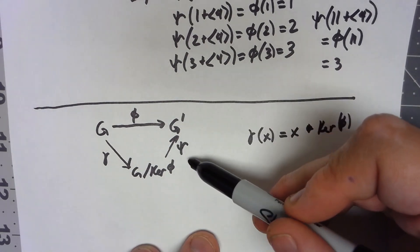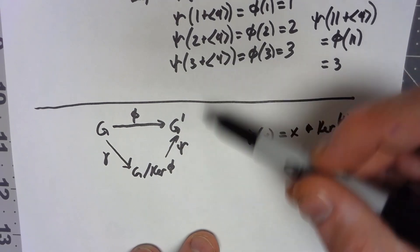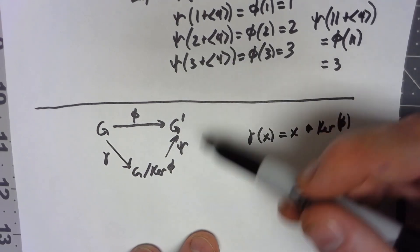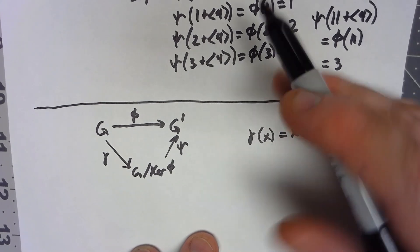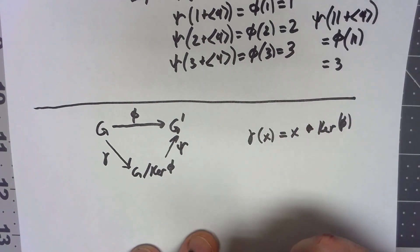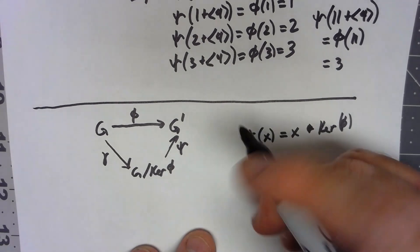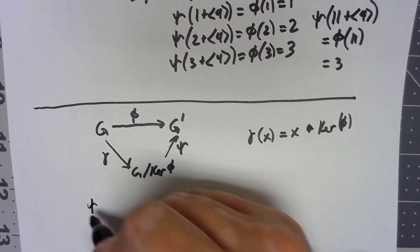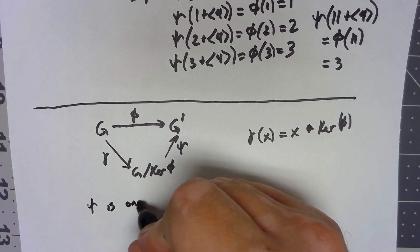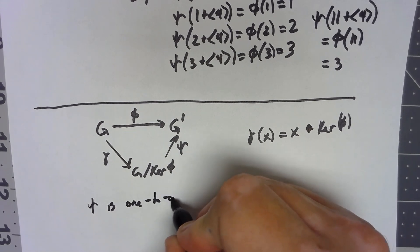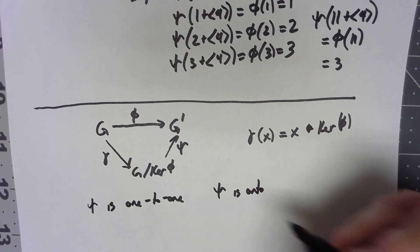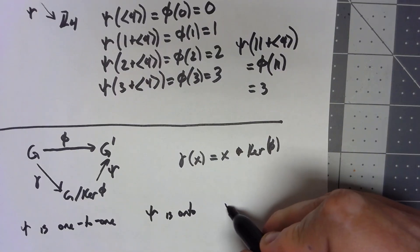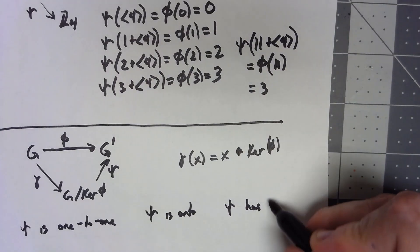So what we just need to show is that given all this setup, that this is actually an isomorphism. It's not exactly proven, but if we use some of the properties in the textbook, it's easy to show that chi is a well-defined function, so I'm not going to go through that. So what we need to show is that chi is one to one. We need to show that chi is onto, and we need to show that chi has the homomorphism property.